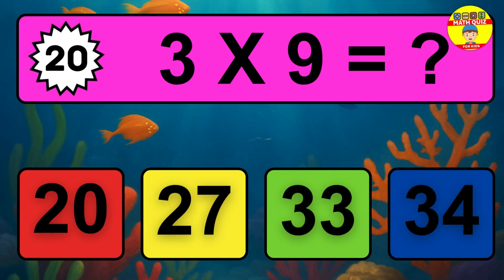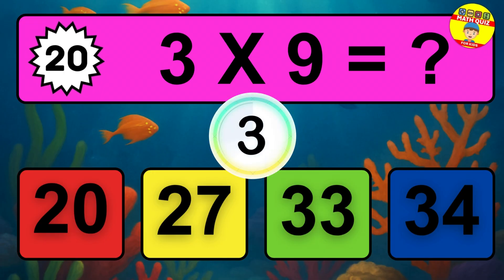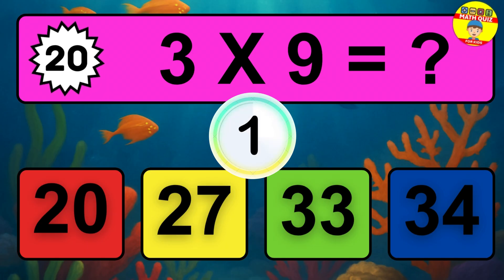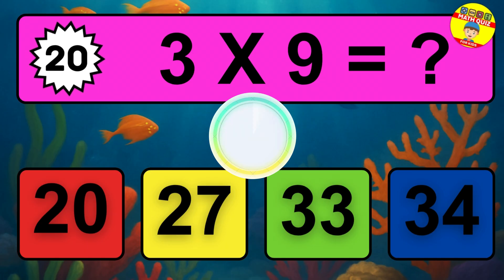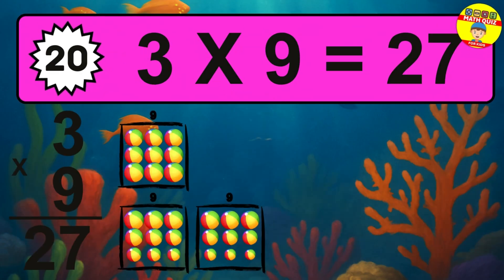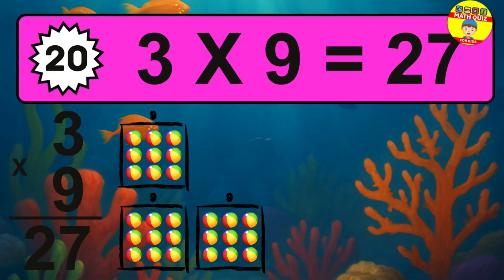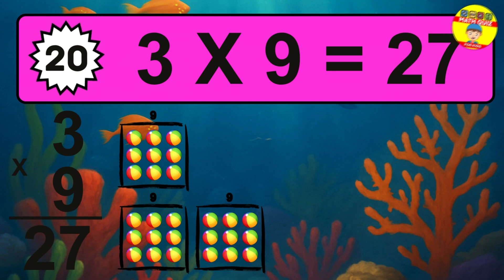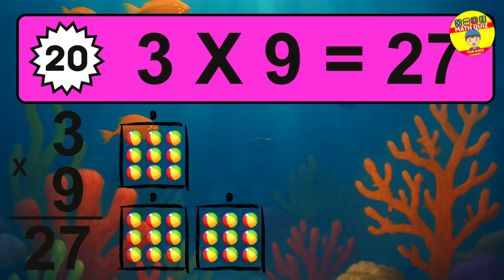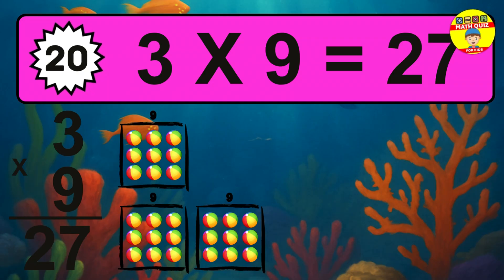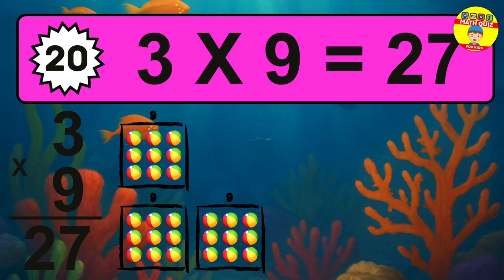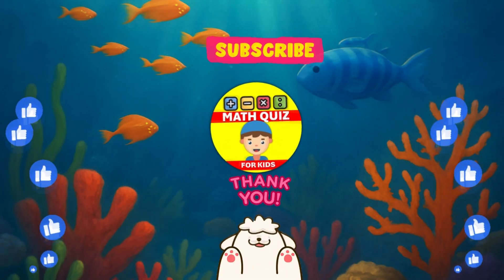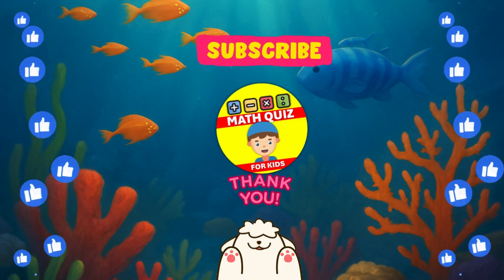Question 20. 3 times 9 equals what? The answer is 3 times 9 is 27. To calculate, we have 3 groups with 9 balls each one. So, how many balls do we have? How many did you get right?